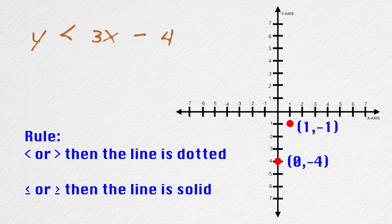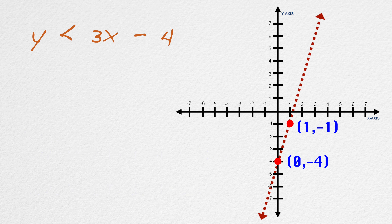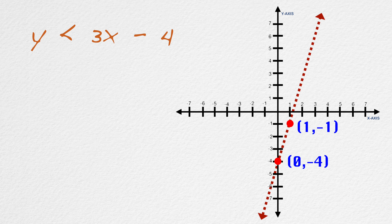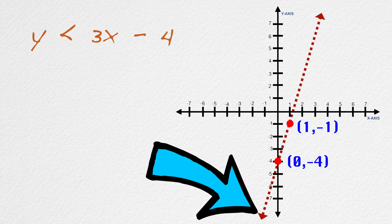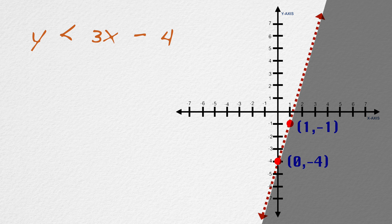Let's go ahead and draw the dotted line. We drew a dotted line because this sign is a less than sign. That means y cannot be any value on this line — it has to be any value below this line. So let's shade all the values that y can be. As you can see, y can be any of these values.